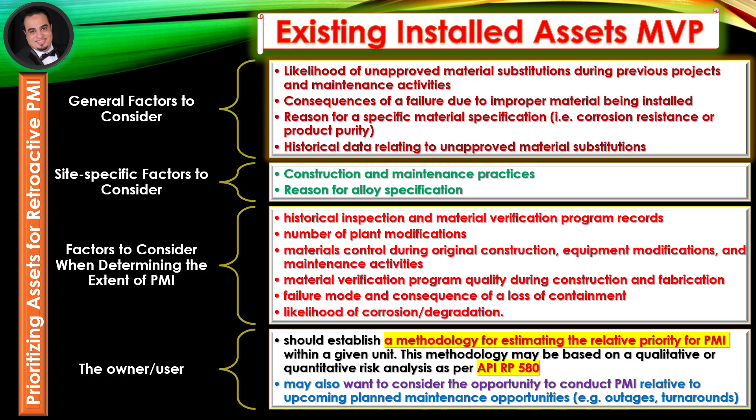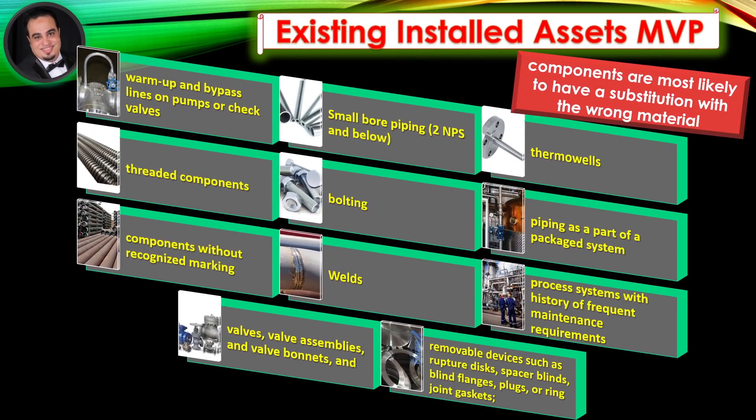Factors to consider when determining the extent of Positive Material Identification include: failure mode and consequence of a loss of containment, and likelihood of corrosion degradation. The owner-user should establish a methodology for estimating the relative priority for PMI within a given unit. This methodology may be based on a qualitative or quantitative risk analysis as per API RP 580. The owner-user may also want to consider the opportunity to conduct PMI relative to upcoming planned maintenance opportunities, for example outages and turnarounds.